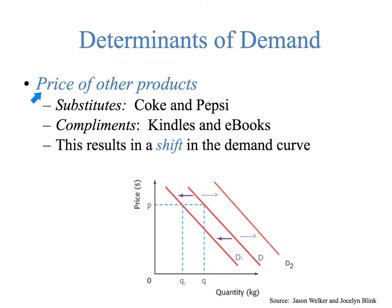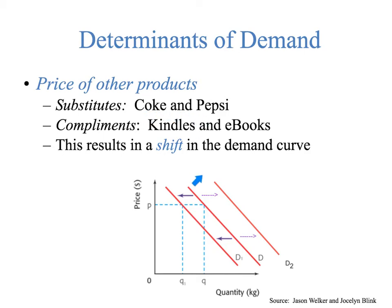The price of other products — for substitutes: if the price of Coke goes up, you can imagine the demand for Pepsi would also go up. If Coke gets more expensive, people are going to say forget that — if they just want a cola, demand for Pepsi shifts outward. If the price of Coke goes down, people will buy more Coke, and demand for Pepsi shifts inward because more people buying Coke want cola. So that's substitutes — a shift of the demand curve because price of other products is not on this graph.